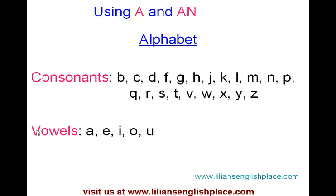What you have to know when you want to use A and AN is the English alphabet. The English alphabet is made up of 21 consonants and 5 vowels. We have consonants like B, C, D, F right up to Z, and your 5 vowels will be A, E, I, O, U.